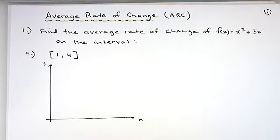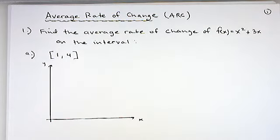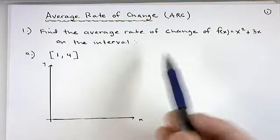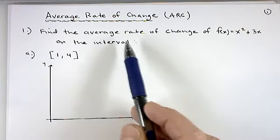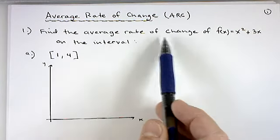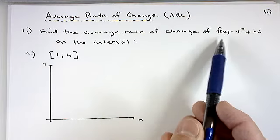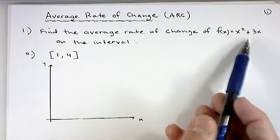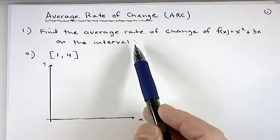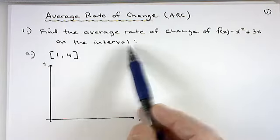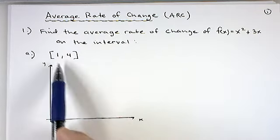In this video, we're going to talk about something called the average rate of change of a function. As an example, we'll start with finding the average rate of change of f(x) = x² + 3x on the interval from 1 to 4.